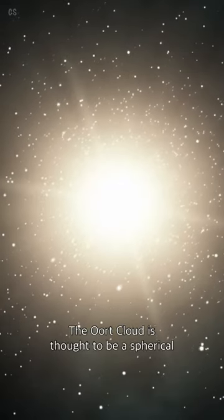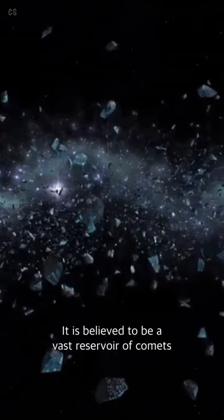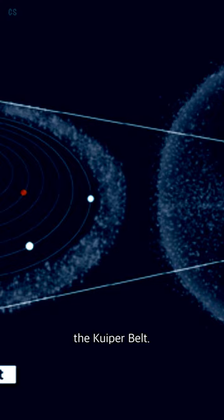The Oort cloud is thought to be a spherical shell surrounding the solar system. It is believed to be a vast reservoir of comets and other icy bodies, extending far beyond the Kuiper belt.